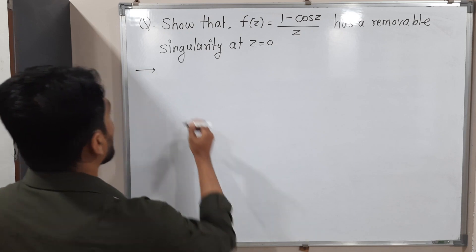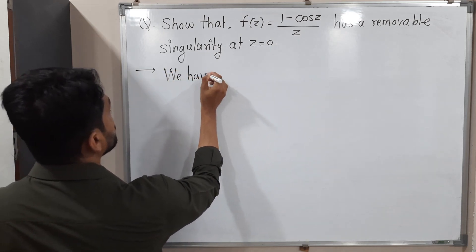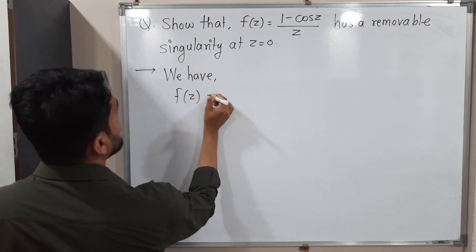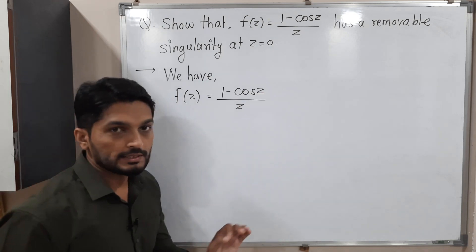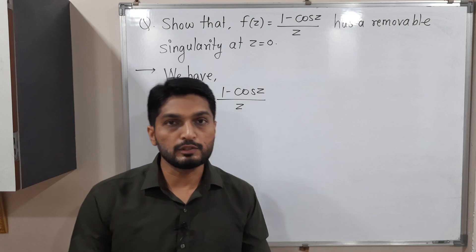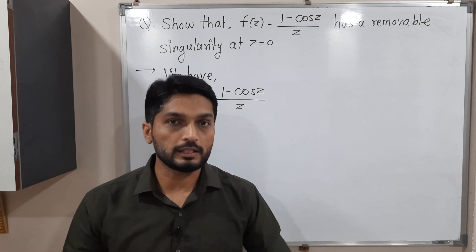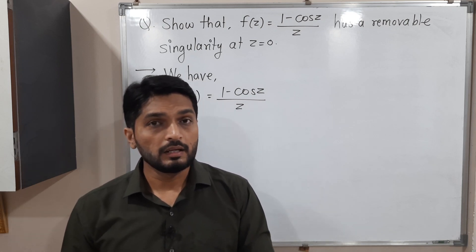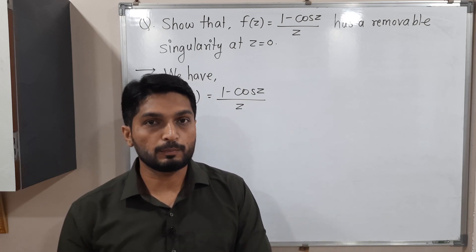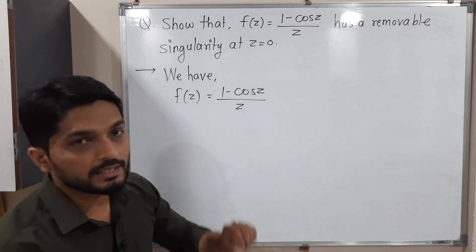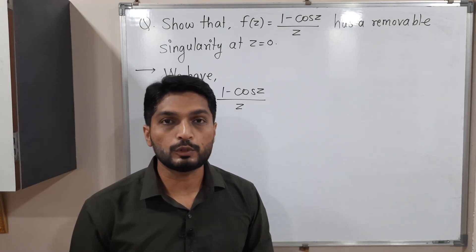The given function is f(z) = (1 - cos z) / z. First of all we will find its singularity — the point where the function is not analytic. In simple terms, if the denominator is 0 at a particular point, we say it is a singular point. You can easily see that if we put z = 0, the denominator is 0, so z = 0 is a singular point.